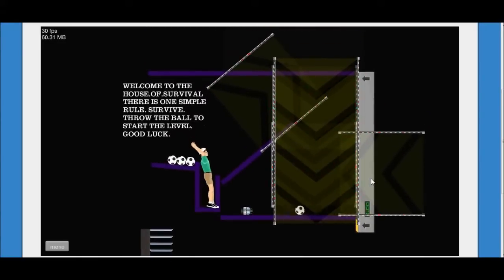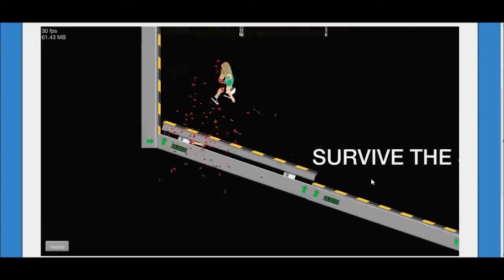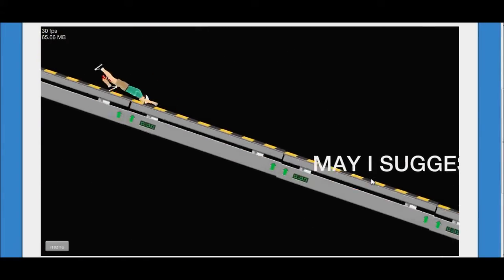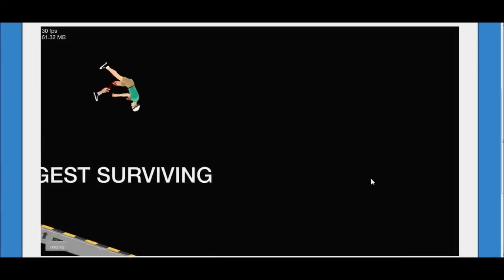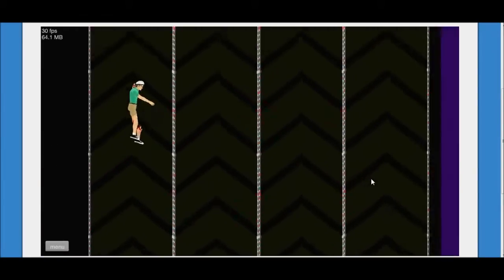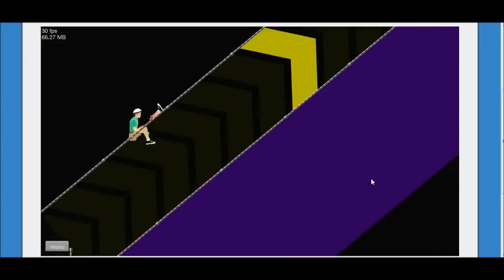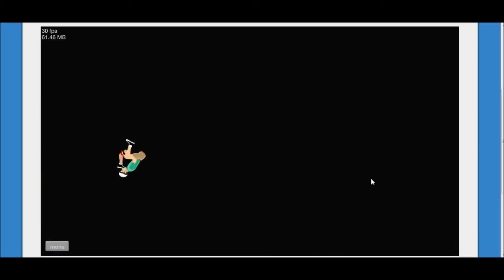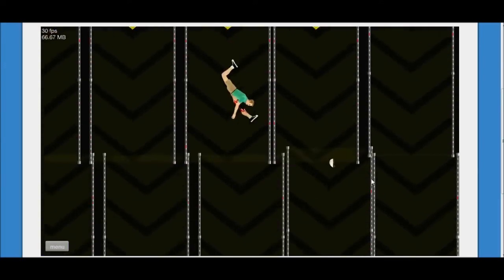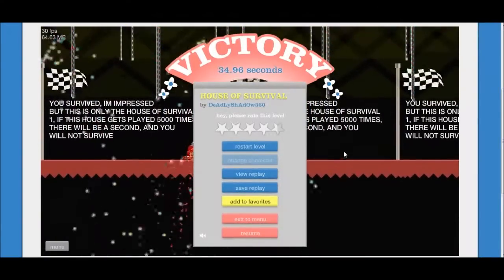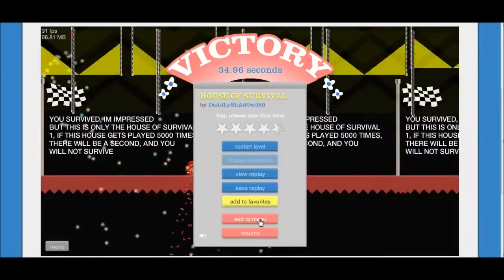All right. Let's do the Femurs of Steel trick. Femurs! Oh, my gosh. Flatten out. Increase the surface area. Ow. Okay. I got this. As long as I don't get my head exploded. Sweet. Okay. Clench up. Come on. Oh, God. This is gonna suck. Oh, my shin is in my mouth. Ha! Oh, yeah! You survived. I'm impressed. But this is only the House of Survival won. If this house gets played 5,000... Yeah. Okay. Whatever.